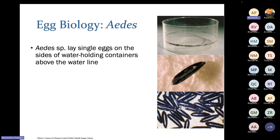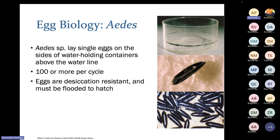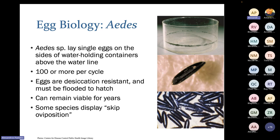Starting with the egg stage, Aedes lay their eggs singly on the sides of water-holding containers above the water line. Aedes lay around 100 or more eggs per cycle, and these eggs are desiccation resistant — they can withstand drying and remain viable for years, emerging once flooded. This makes controlling Aedes difficult. Some Aedes also display skip oviposition, meaning they like to spread eggs across multiple containers in a backyard.